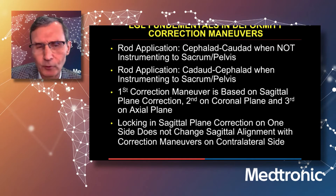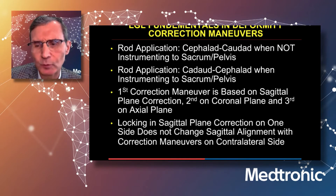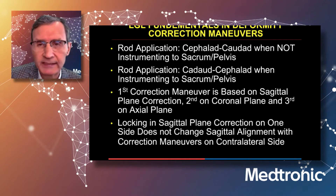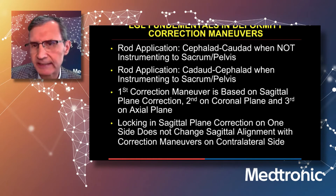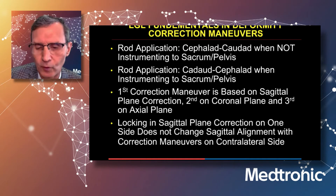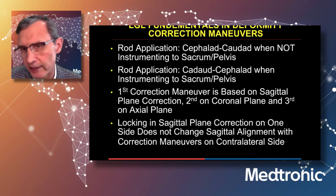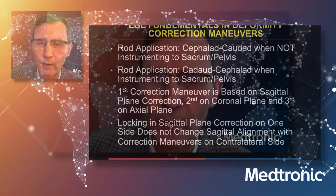Something I've learned over time is that locking the sagittal plane correction on one side does not change the sagittal alignment overall, no matter what you do on the contralateral side. That's why it's important to lock in your sagittal alignment with your initial maneuver.